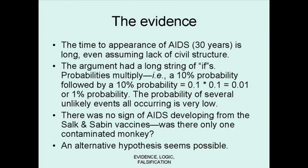There were also lots of other reasons to doubt the original argument, including that there were an awful lot of assumptions in it, and the more assumptions you make, the less probable it becomes. Also, there was absolutely no sign of AIDS developing in any of the other Salk or Sabin vaccines, which would say that the Koprowski vaccine was the only one contaminated. And the idea that AIDS would not have been noticed even during civil war seemed to be a bit far-fetched.